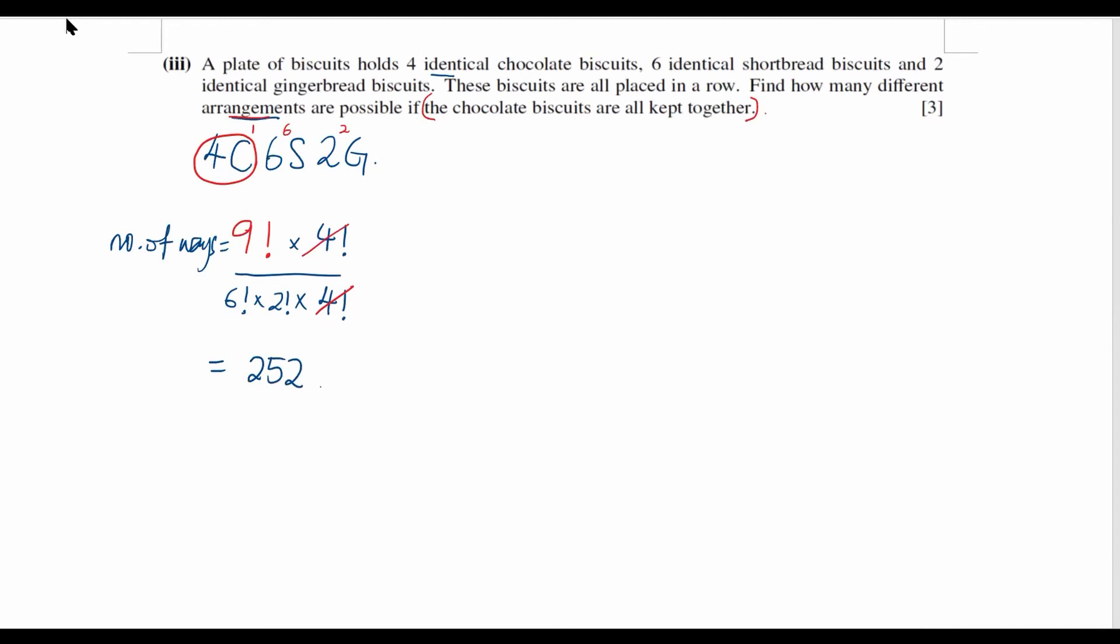It's going to be 252. That is the answer for part 3. Number of arrangements for the restriction given that the chocolate biscuits are all kept together.